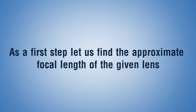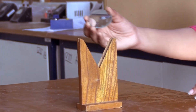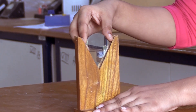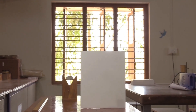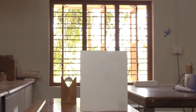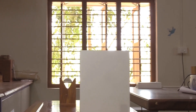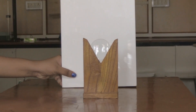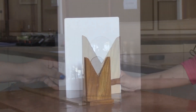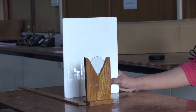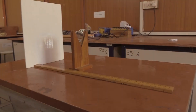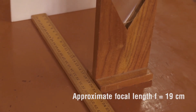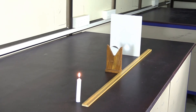Procedure: as a first step, let us find the approximate focal length of the given lens. Take a thin convex lens and place it vertically on a lens holder kept on a table. To determine the approximate focal length, focus rays from a distant object — for example, a tree — using the convex lens and obtain an image on a screen placed on the other side of the lens. Move the screen back and forth to obtain a sharp and clear image. Measure this distance between the screen and the lens as the approximate focal length F.